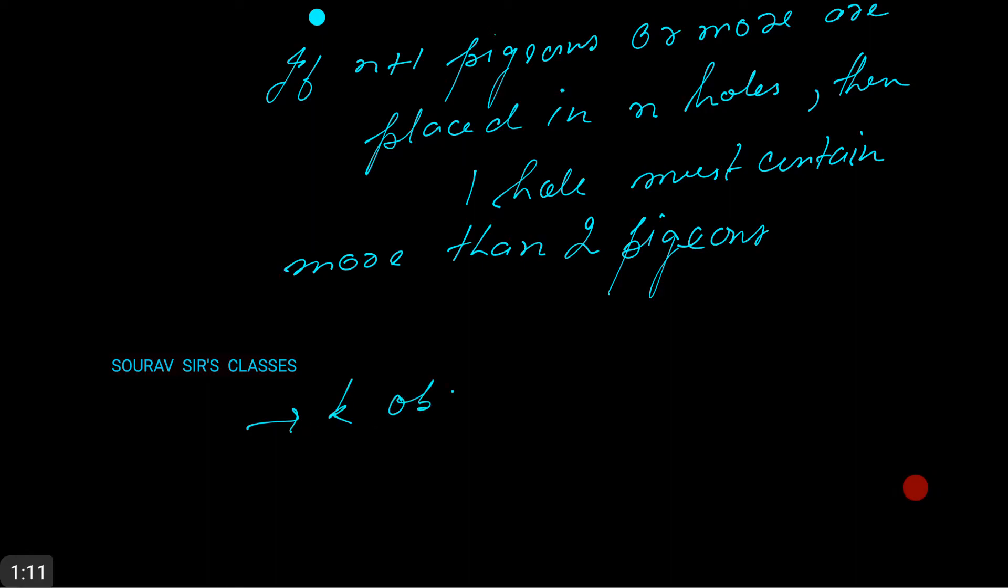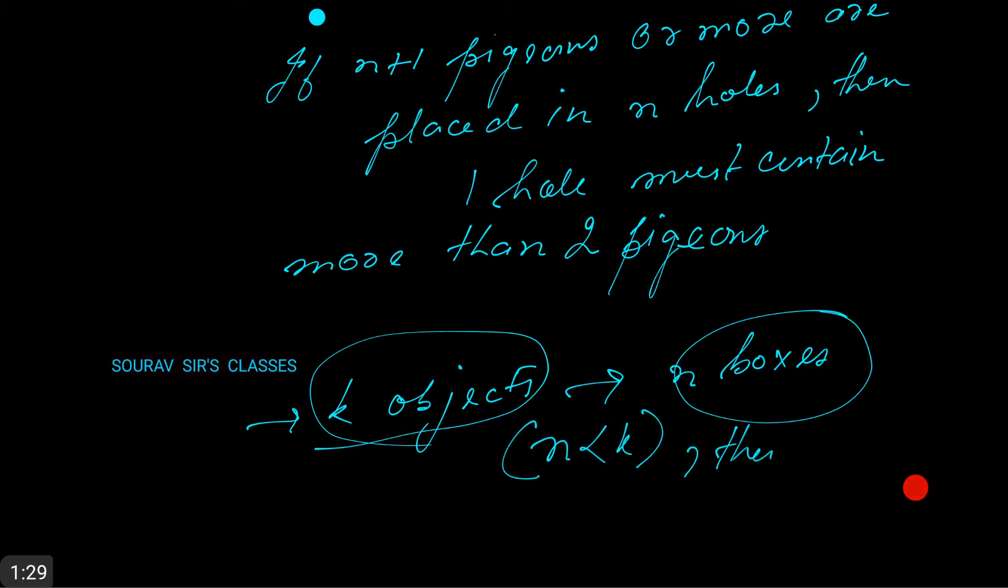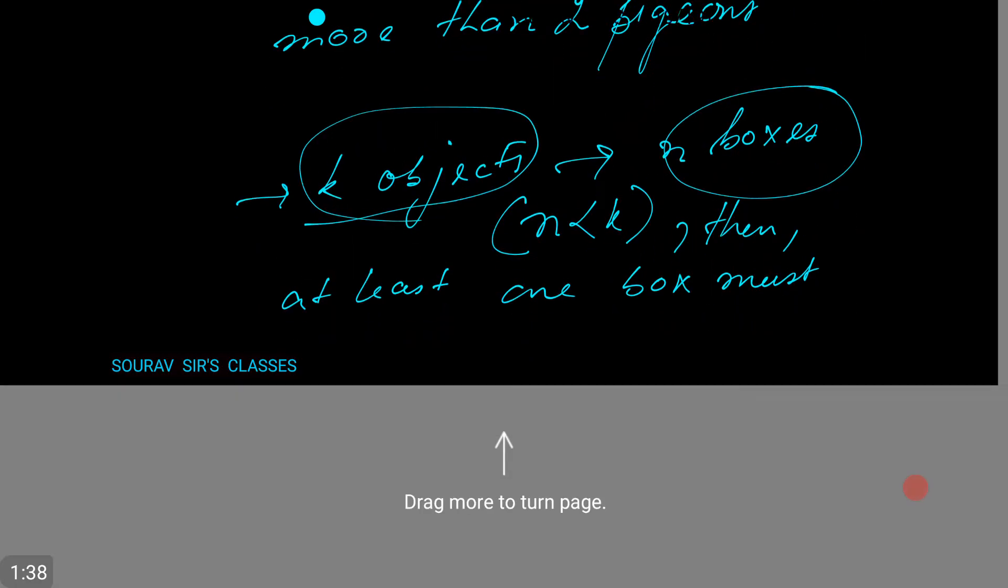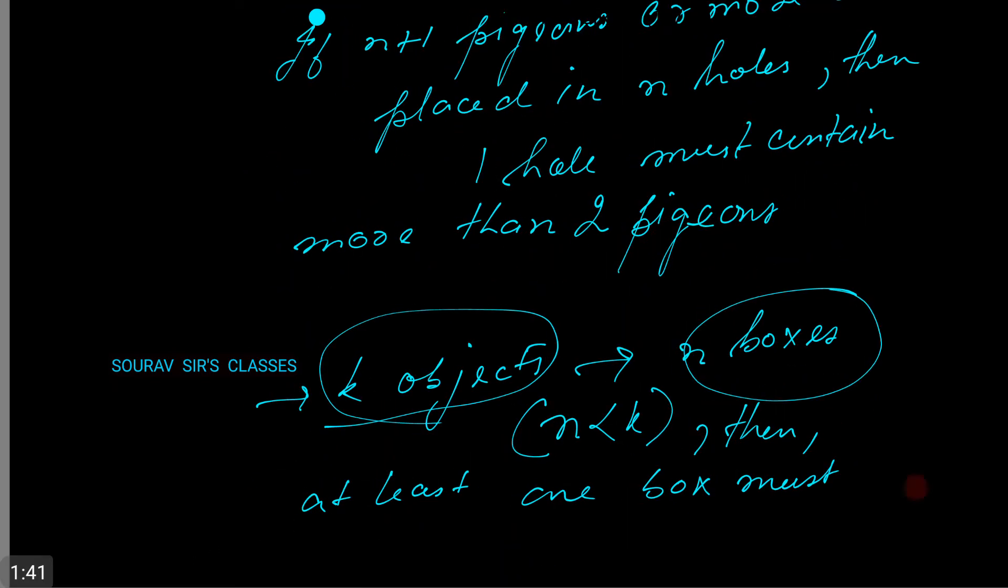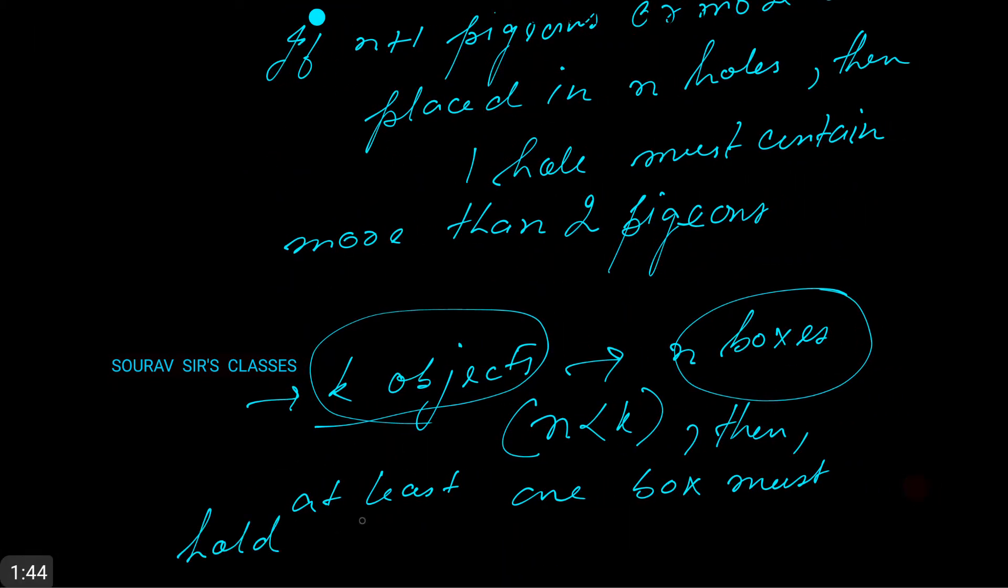If k objects are placed in n boxes, with the restriction that n is less than k, then at least one box must hold the box function of n by k. This is, as we all know, the box function or the greatest integer function.